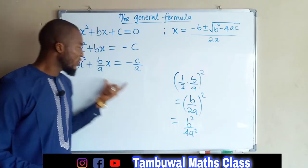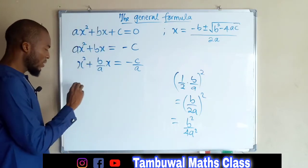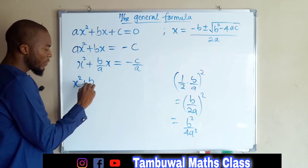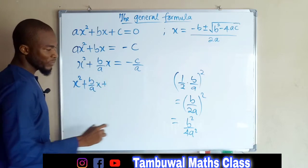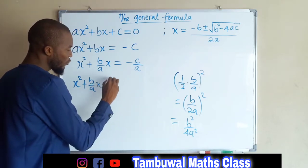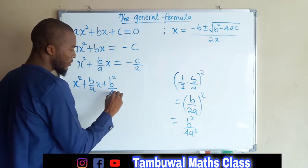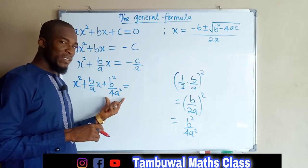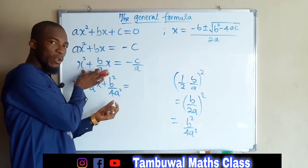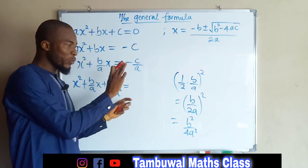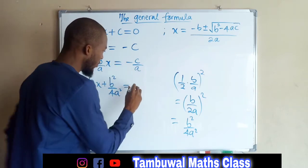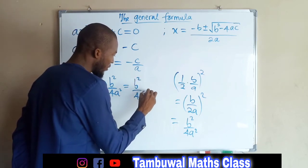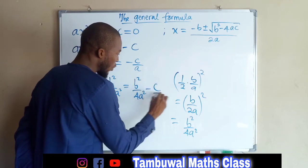We are going to add this term to both sides to make it a complete square. So we have x squared plus b over a times x plus b squared over 4a squared. Initially we did not have this term — I added it to make this a complete square. To keep the equation balanced, we also add it to the other side, giving b squared over 4a squared minus c over a.